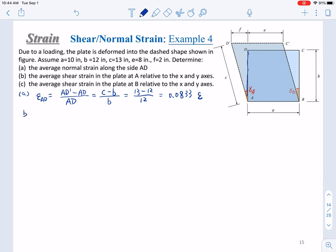All right, then step B. We're calculating the average shear strain in the plate at point A relative to the x and y axes. So here we're solving gamma at point A. As we mentioned, we have different methods to calculate this gamma at a point. We can use alpha minus beta or delta x over L. So we can try them. You can try both, actually.